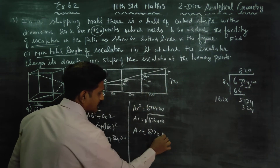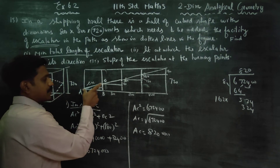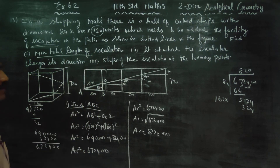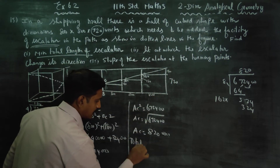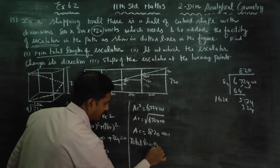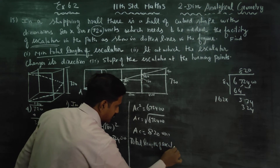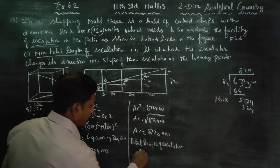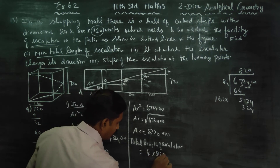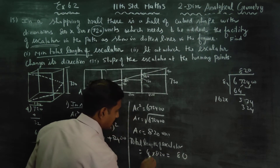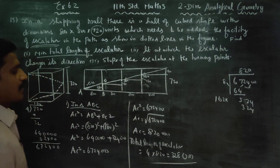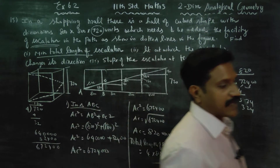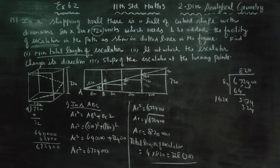AC = 820 units. The total length of the escalator is 4 pieces, therefore total length = 4 × 820 = 3,280 units.